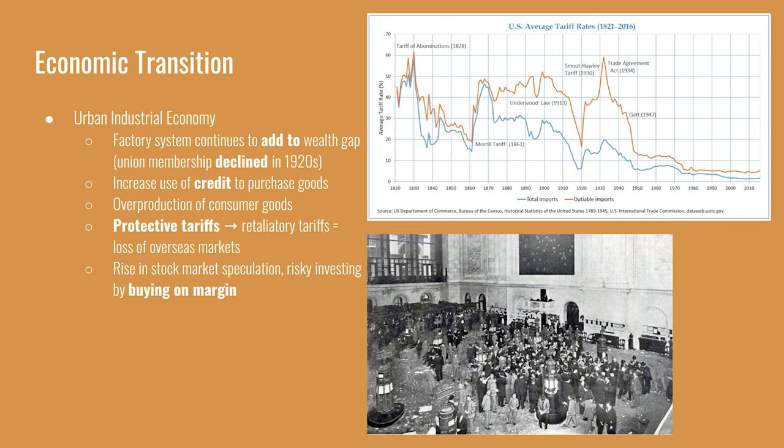The urban industrial economy of the 1920s was relatively strong, even though there were some weaknesses in the foundations of that prosperity. The factory system continued through the 1920s, made more efficient by assembly lines and scientific management. But it was adding to the wealth gap — the people who owned the factories continued to make more money, while the people working in factories were not sharing equally in the economic growth.